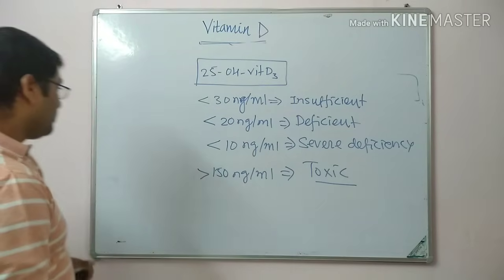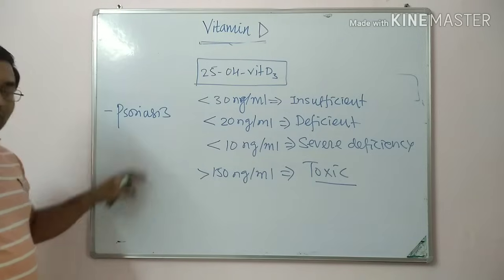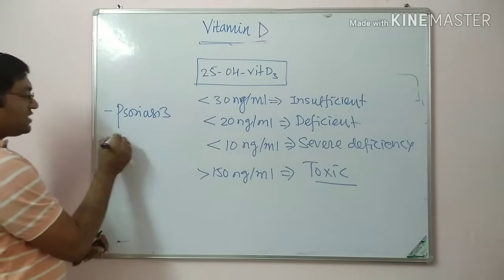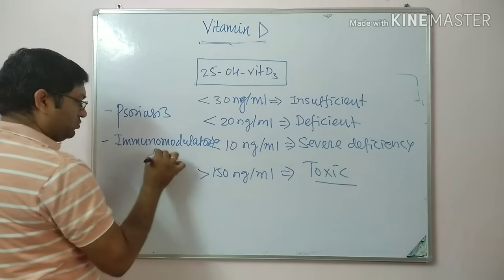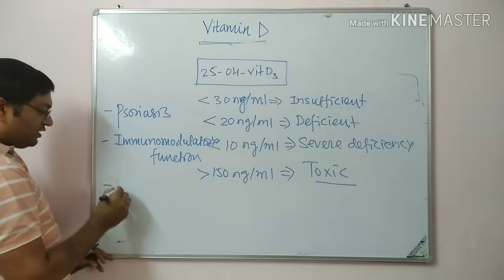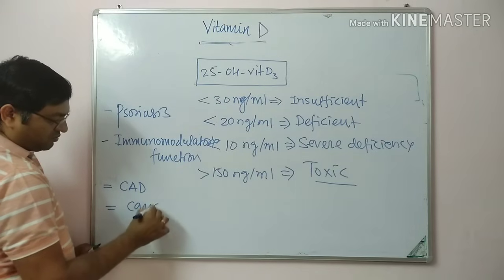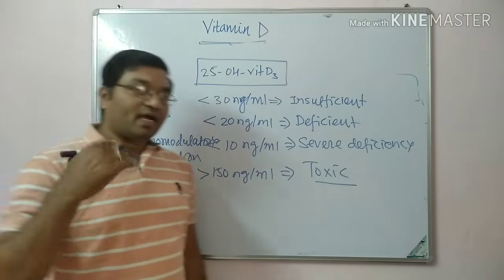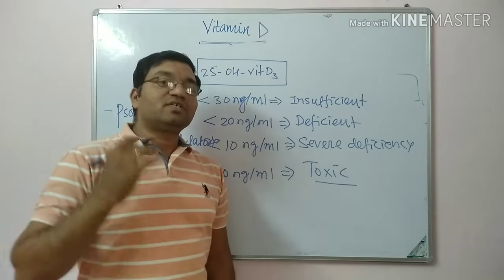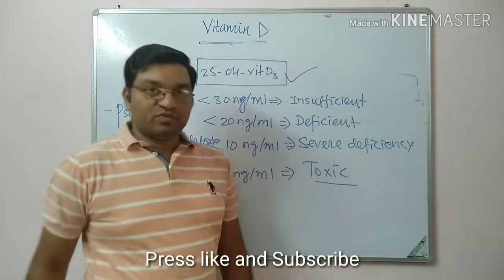Vitamin D has other functions as well. It is helpful in treatment of psoriasis due to its anti-proliferative action. It has immunomodulatory function and is thought to prevent coronary artery diseases, and is useful in some cancers. This concludes the discussion on vitamin D — covering chemistry, provitamins, activation, action on three target tissues, deficiency manifestations including rickets and osteomalacia, and blood levels.